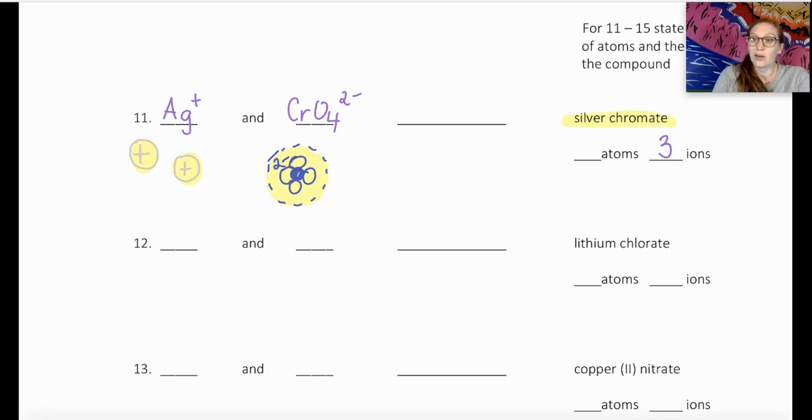But if I count up the total number of atoms that I have, we want to count each individual particle. So here, each silver is going to be one atom apiece, but the chromate has a total of five atoms. So if we count here.